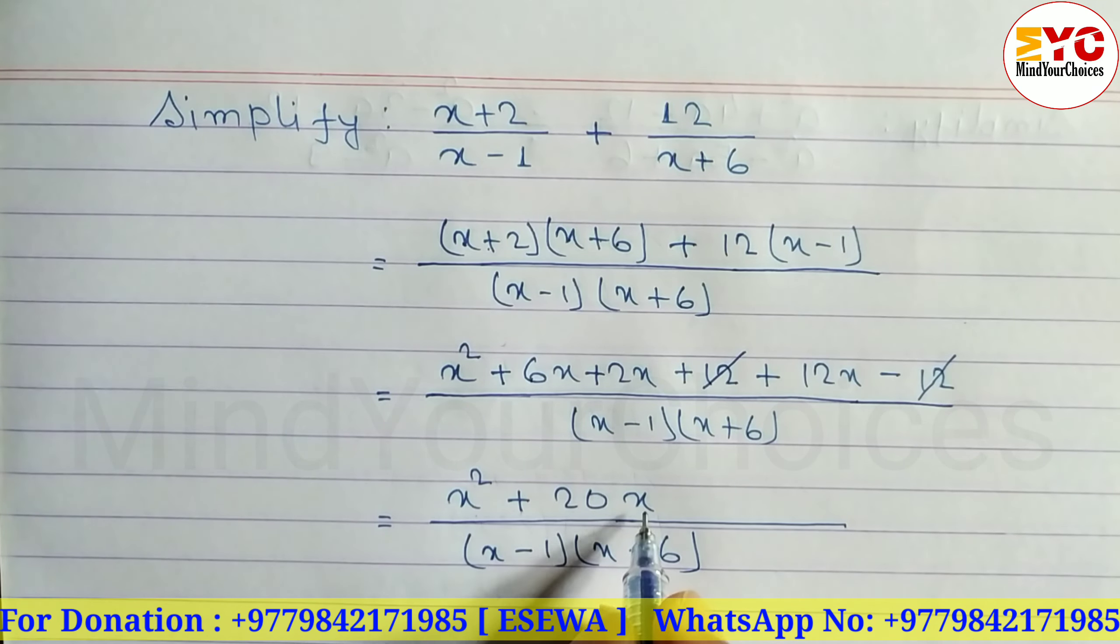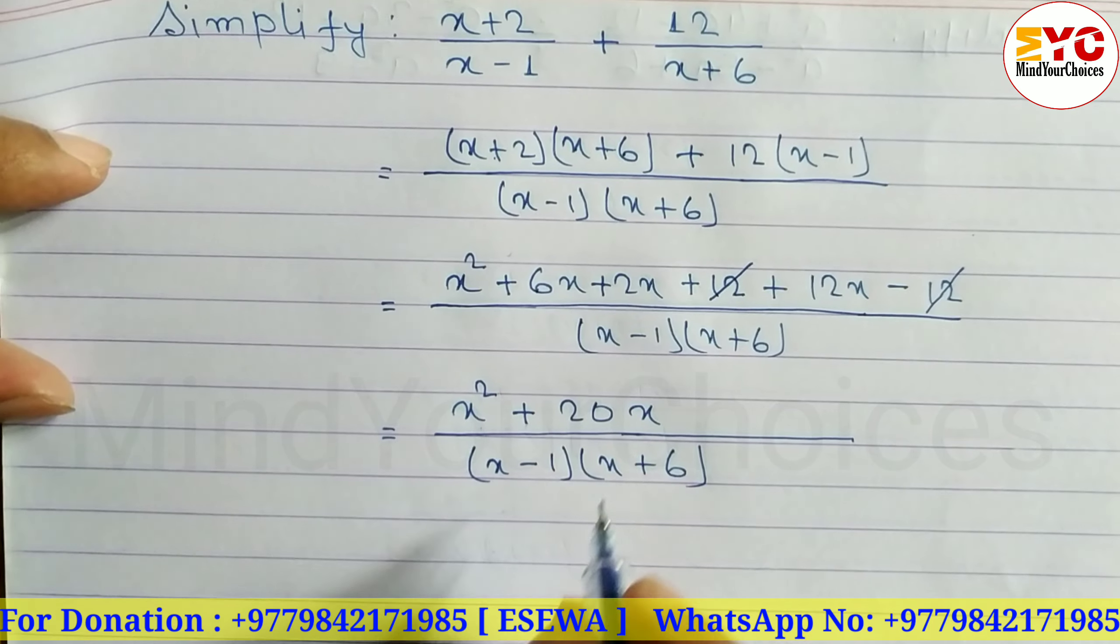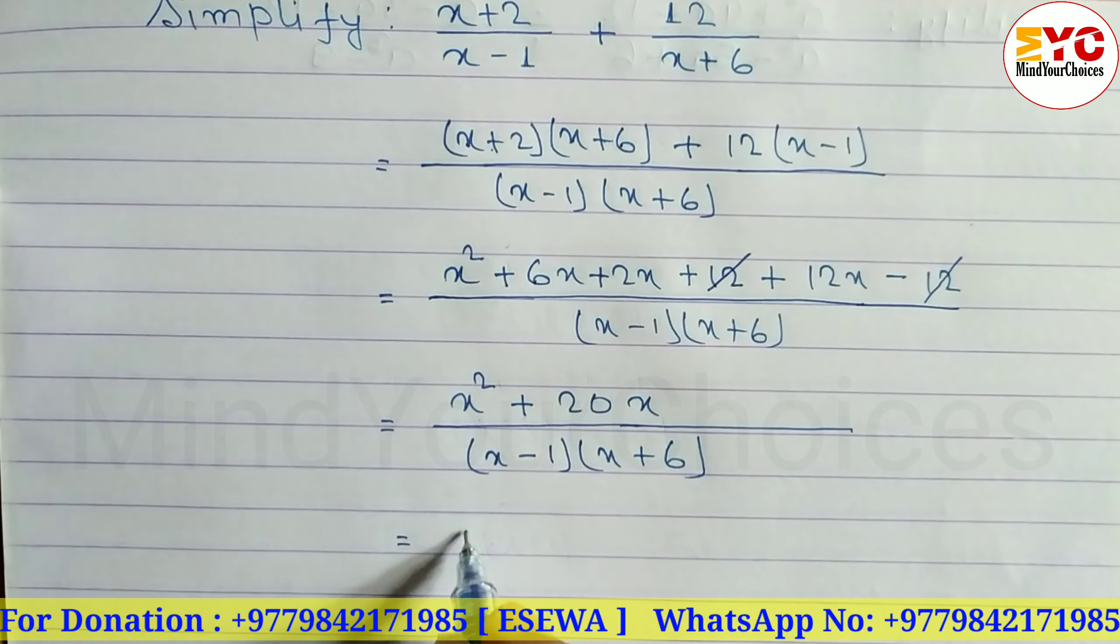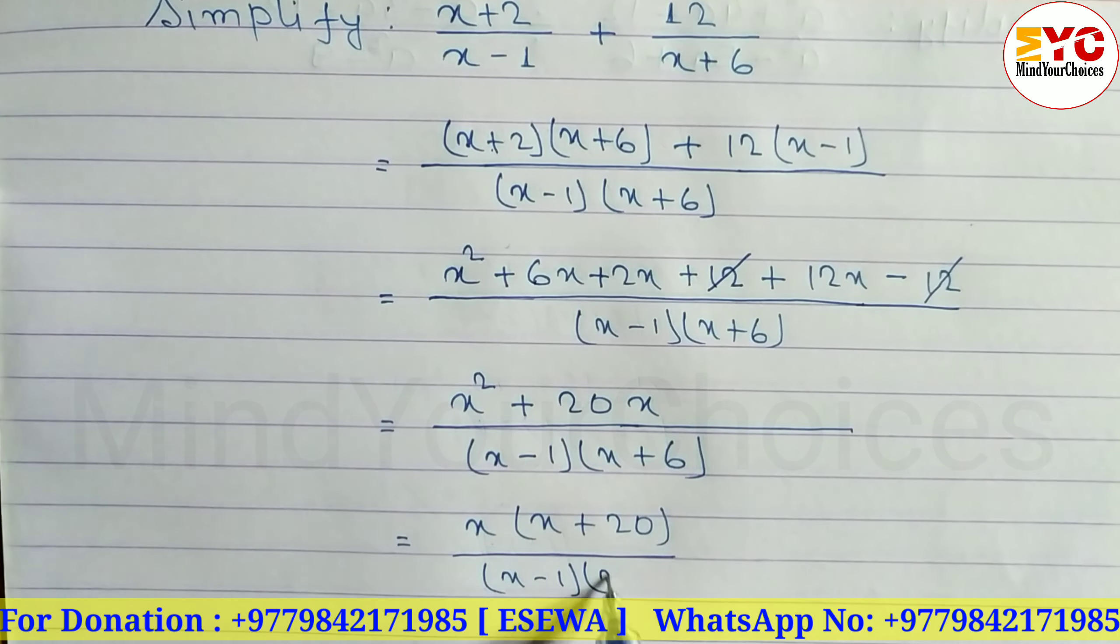Now here is x square and here is x. So x is common. We can take x common. Remaining will be x plus 20 divided by x minus 1 times x plus 6. This is your answer.